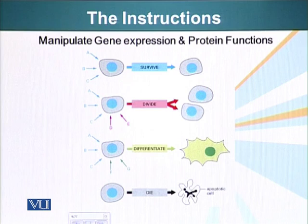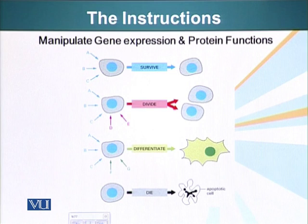Signals also tell our cells to divide. We've talked about cell division and how certain proteins are produced when cells receive a signal. For example, cyclin proteins — when cells receive a signal to divide, these proteins are made and, with the help of CDKs, put the cells into the division cycle. So signaling molecules can also tell cells to divide.